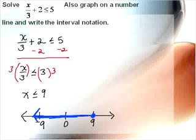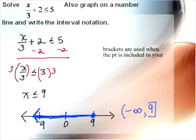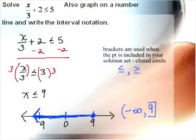For interval notation, we're going to negative infinity — parenthesis — we'll have negative infinity, and then we'll have the 9. Because it is a closed circle, that means 9 is included in my solution set. Because it says less than or equal to, 9 is included, so I use a bracket with the 9. Brackets are used when the point is included in your solution set, shown as a closed circle on the number line. We use the bracket when we have less than or equal to, or greater than or equal to. It is standard to use the parentheses with infinity.